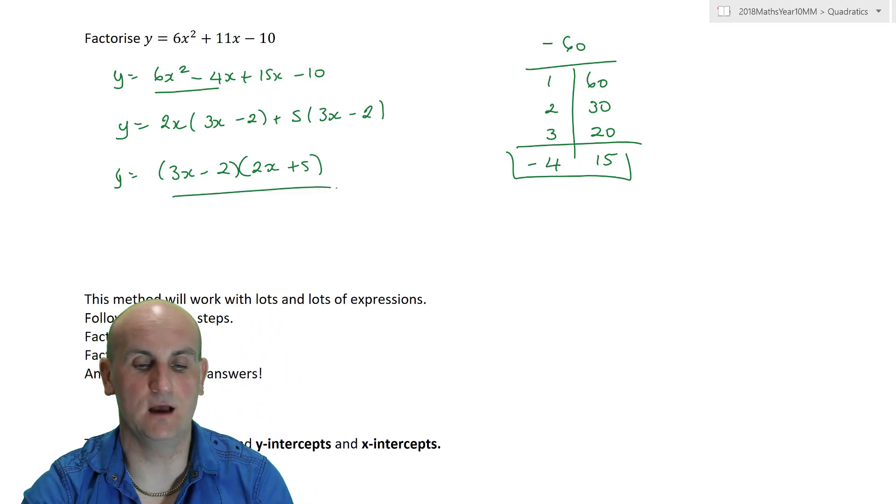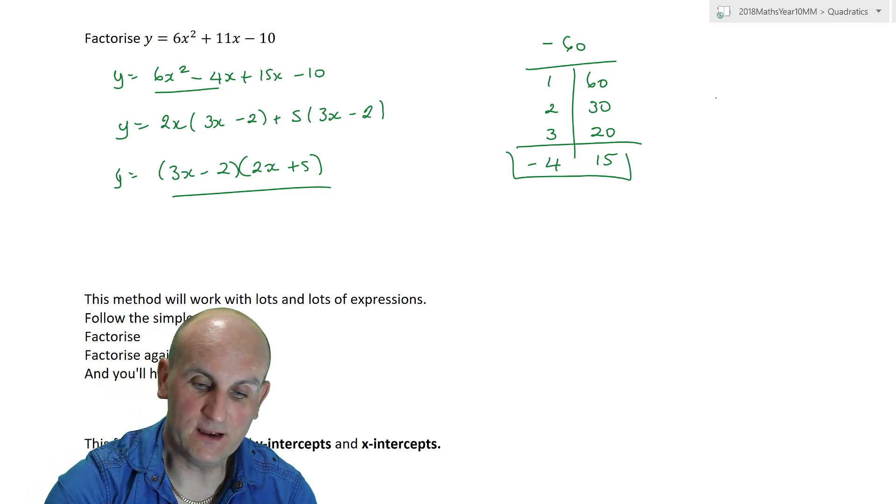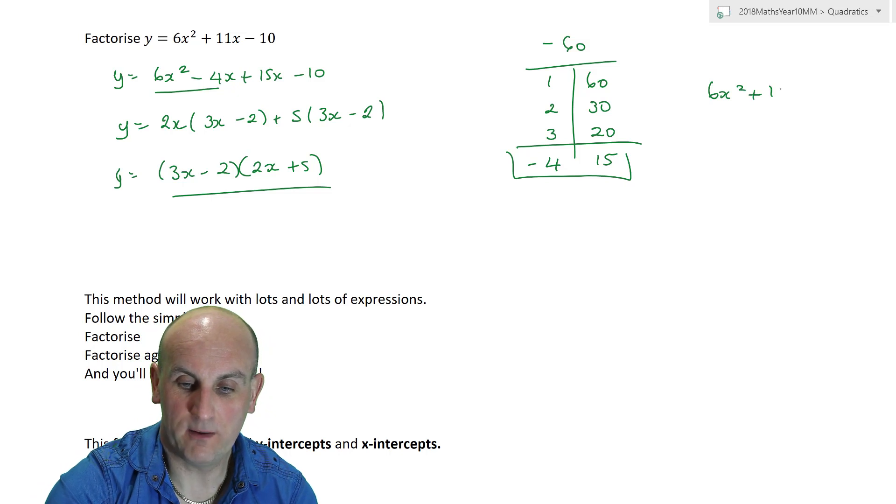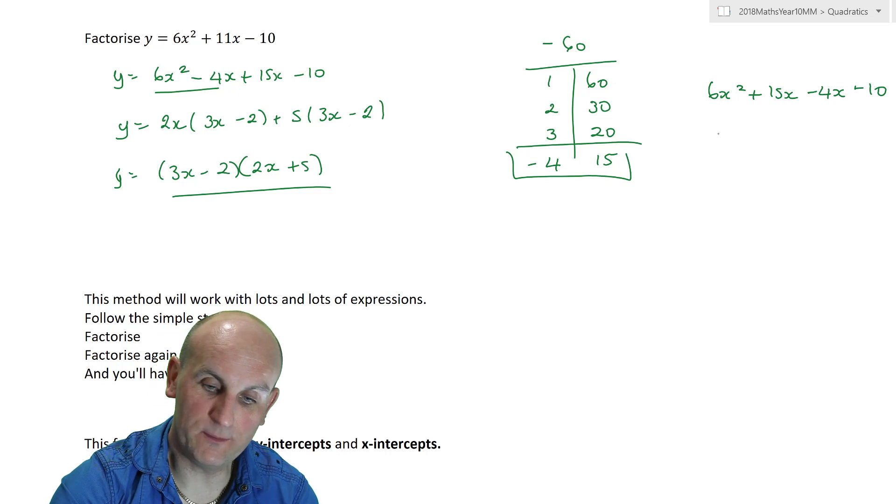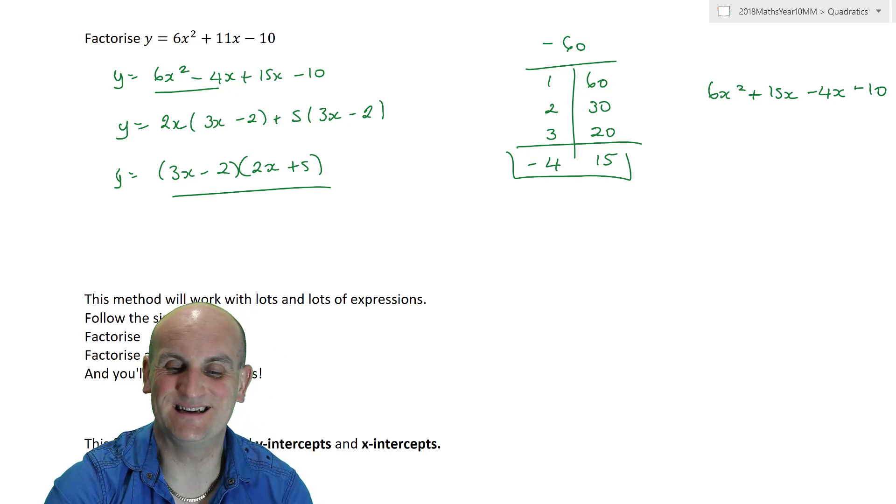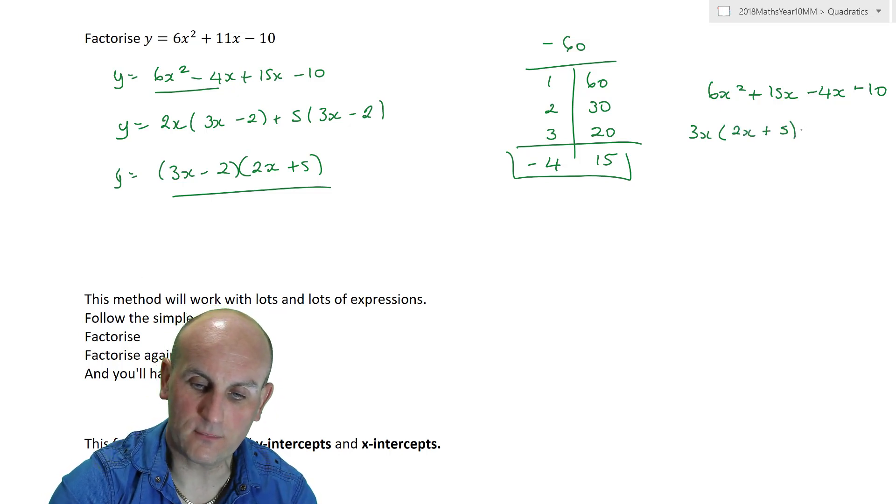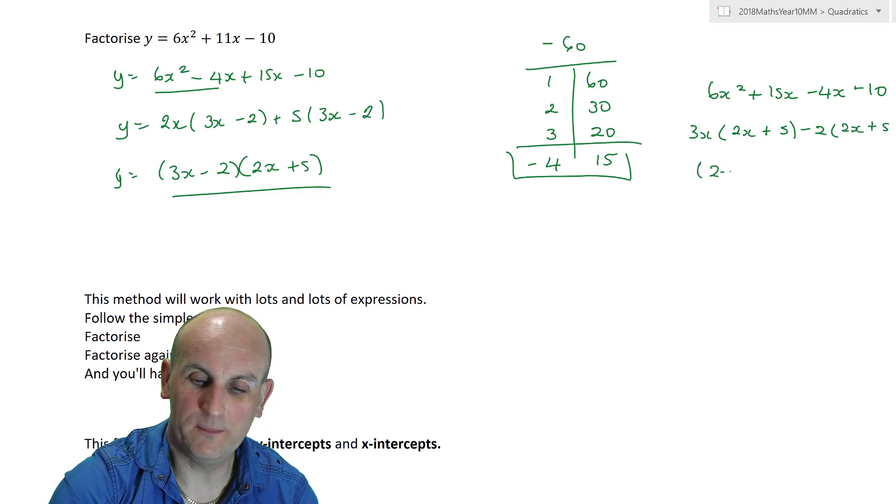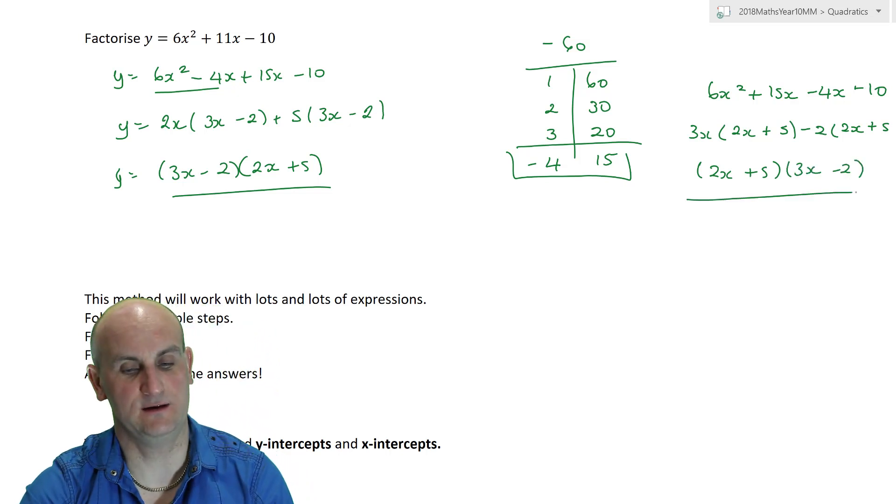Now, a lot of people say to me, does it matter the order of the 4 and, or the minus 4 and the 15? Ah, no. Actually, it doesn't. So, just to show you. If I did it as 6x squared plus 15x minus 4x minus 10. Let's do it by grouping. What am I going to take out here? Well, the most that comes out of 6 and 15 is actually 3. So, I'm going to take out 3x there, which gives me 2x plus 5. And, take out minus 2 there, which gives me 2x plus 5 as well. And, lo and behold, 2x plus 5 and 3x minus 2 give me my same solutions.